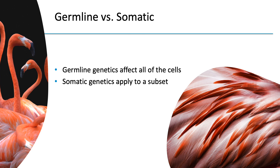We all have somatic genetic alterations that occur as our cells divide and as we live over time. Examples of somatic alterations which are clinically significant include those in cancer, in which the cancer cells have acquired genetic changes that fundamentally alter their behavior. Other examples include somatic mosaic disorders like overgrowths, which affect some parts of the body, like only one leg.